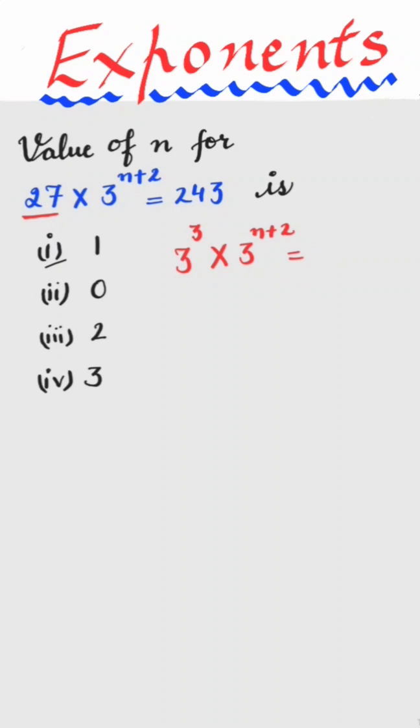equal to. Now 243 can be written as 3 raised to power 5. Now by using laws of exponent, when bases are same and these are in multiplication, the powers will be added. So this can be written as 3